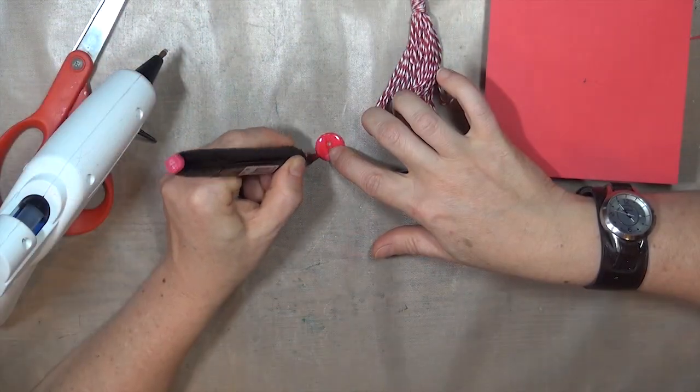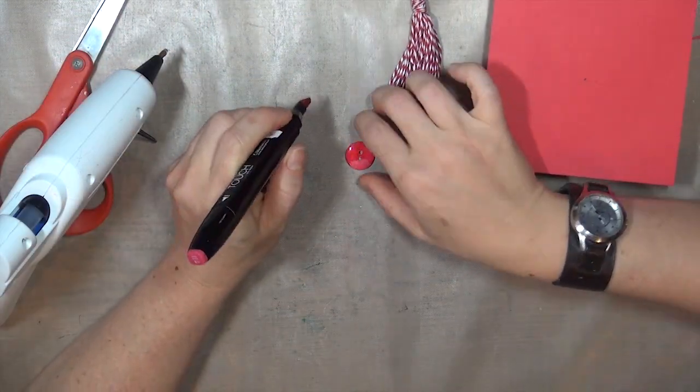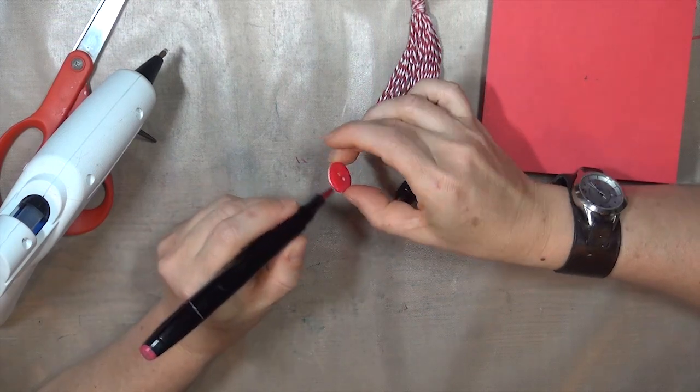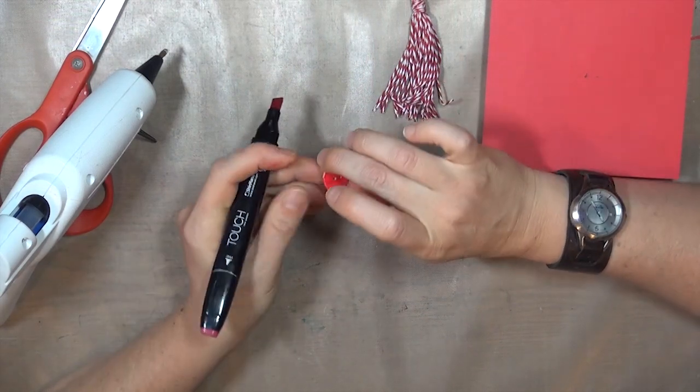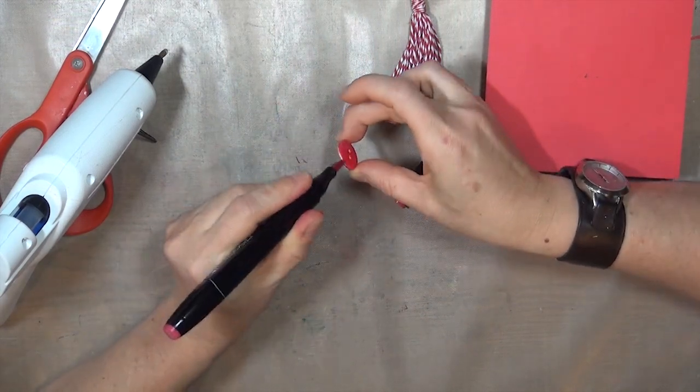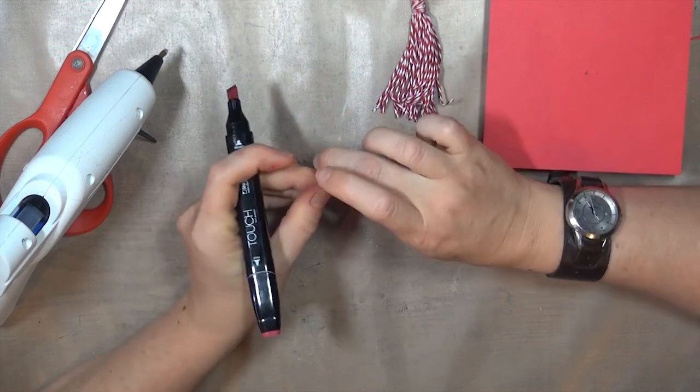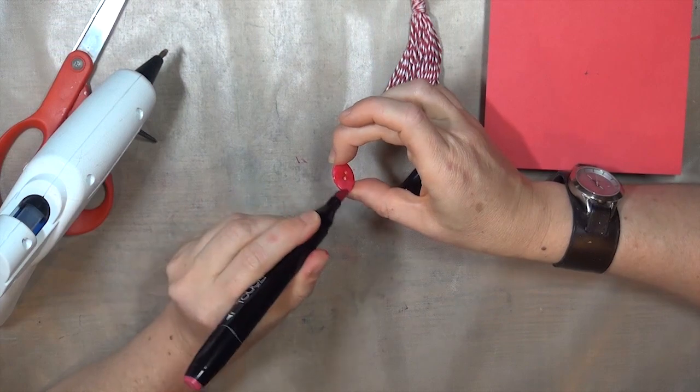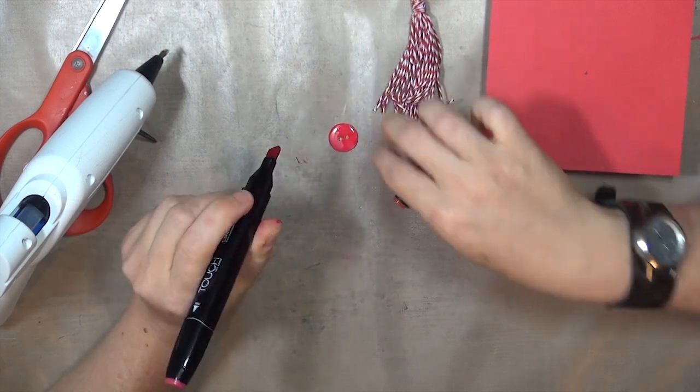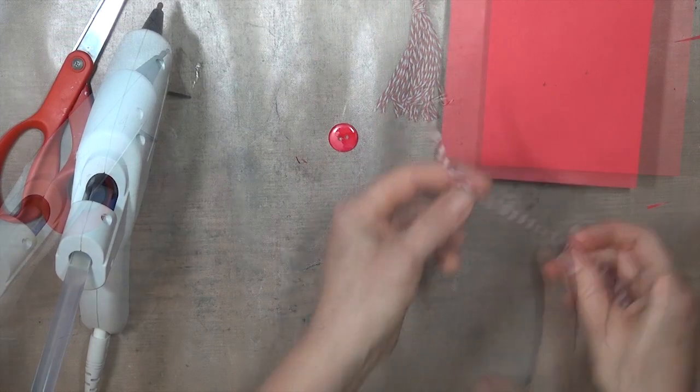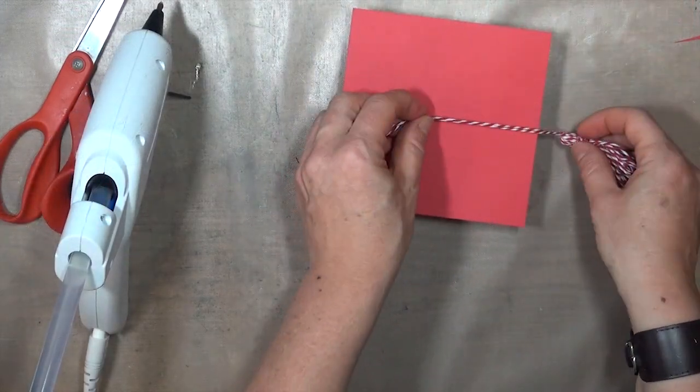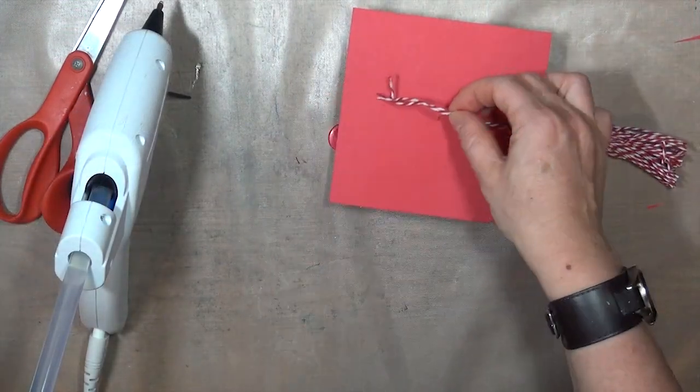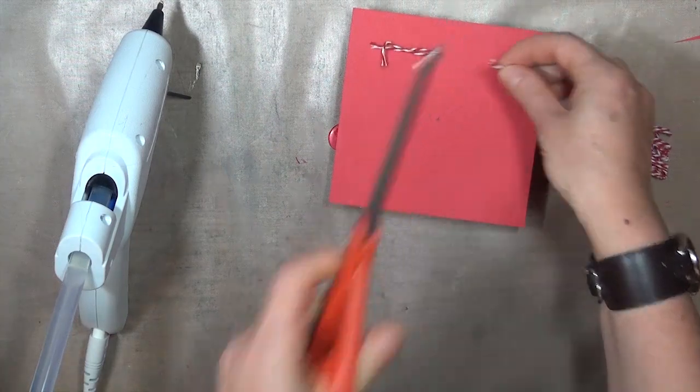To attach the tassel to the box top, you'll need a hot glue gun and a matching button that's about an inch across. I think this one might be 7/8ths. I didn't have a red button, so I just took a neutral one and colored it with an alcohol marker. That's a great way to customize accessories or embellishments to your projects. I'll lay my tassel onto the box lid to determine how long the tie needs to be, and then just trim off the excess with scissors.